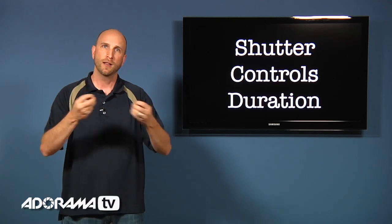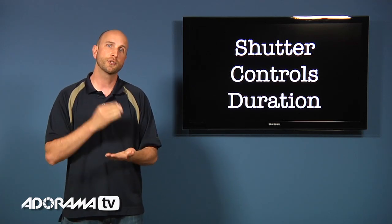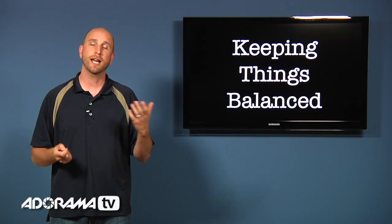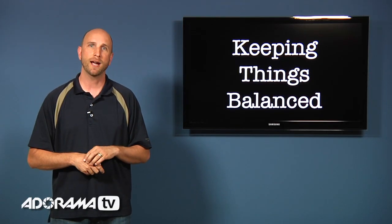So again the shutter controls the duration of light. Now if it's open a long time, lots of light goes through. If it's open for a short time, less light goes through. Well let's talk about how our shutter and aperture work together to keep things balanced.